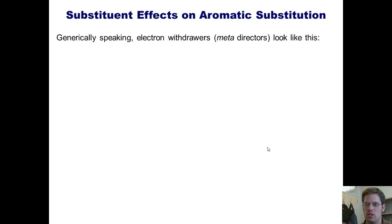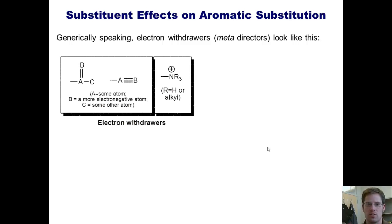To recapitulate what I just taught, generically speaking, electron withdrawers, which are meta directors, look like this. They are either NR3 plus, or they are atoms that are doubly or triply bonded to other atoms that are more electronegative than themselves.